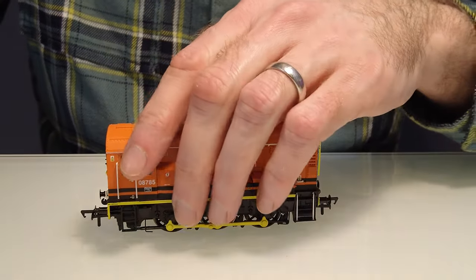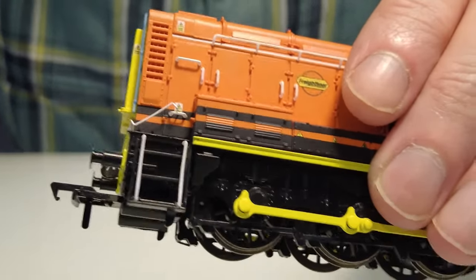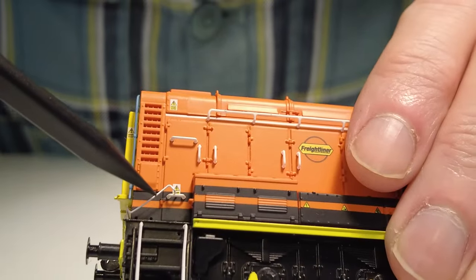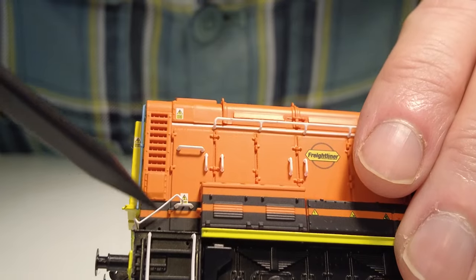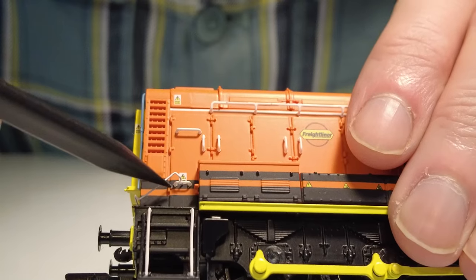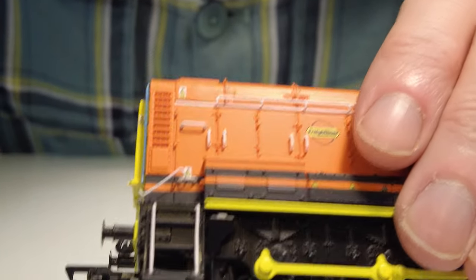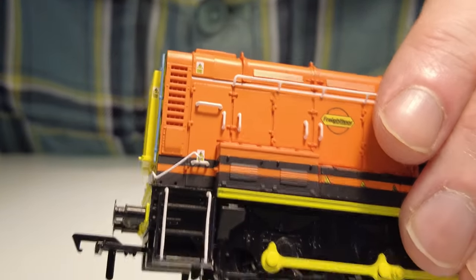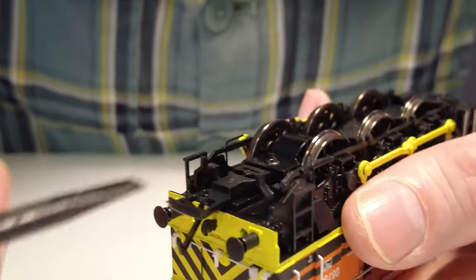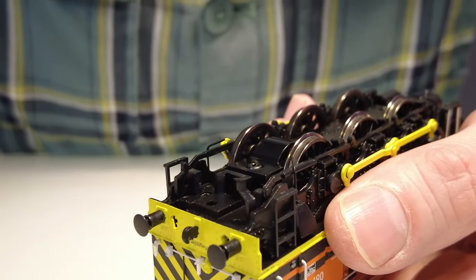So first thing to do is, I've already done it on this one actually because I've already been inside to have a quick look, but you want to move this little white pipe thing out of the hole where it sits here. And I always tuck it just above the little handrail here just because it keeps it out of the way and makes sure that you're not going to trap it when you put the body back on. Next thing to do is to get a prying tool and you just want to get it under the rear coupling and flick that out.